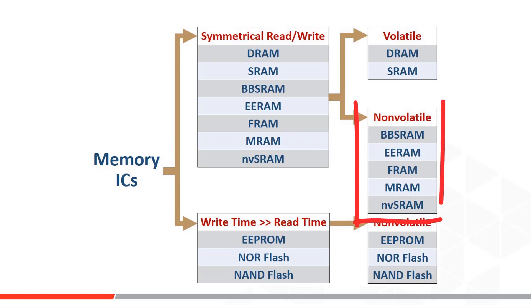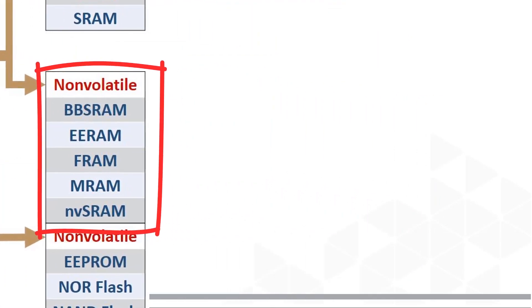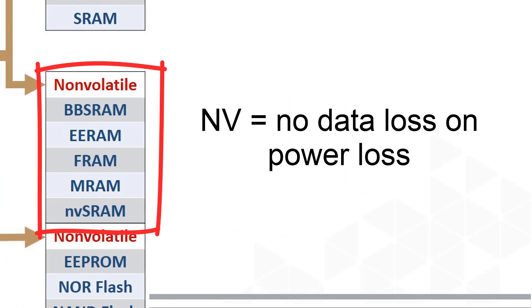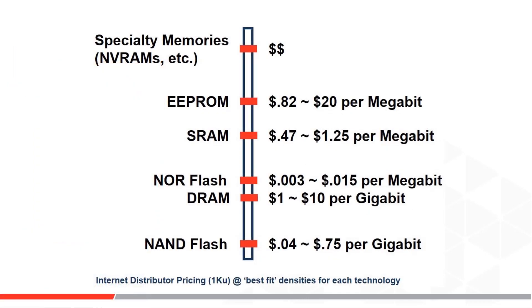Non-volatile RAM, or NVRAM, is this group of products right here. Non-volatile means a memory that doesn't lose its content when power goes away or during a power brownout. To keep things organized, our industry has conveniently used 'RAM' in all these acronyms to keep these tied together for us.